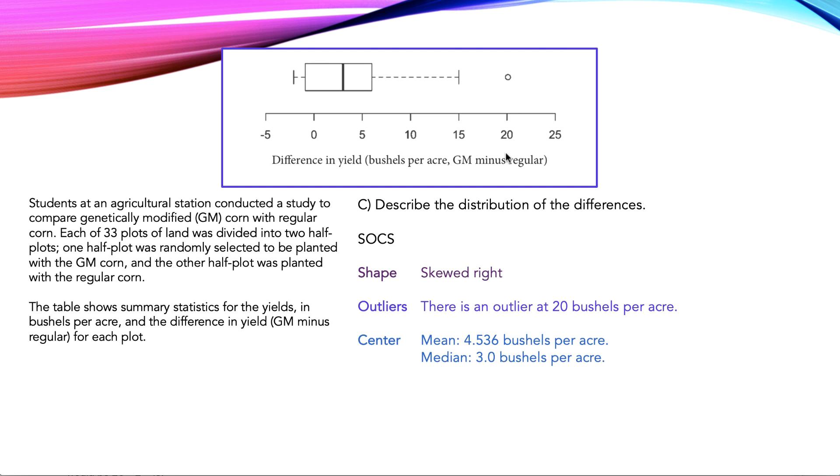C is for center. Our mean is 4.536. I pulled that from the table earlier, and then I pulled the median also, it's 3.0. And this supports the idea that our distribution is skewed right because the mean is being influenced by extra high values.